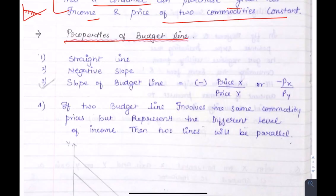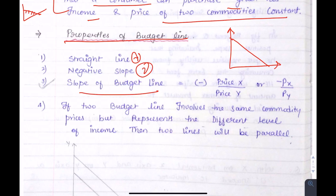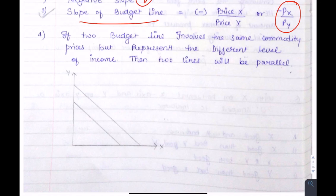Now what are the properties of the budget line? It is downward sloping and straight — that is the first property, with a negative slope. The slope of the budget line is represented as the price of X divided by the price of Y. If there are two budget lines, say A and B, the B budget line shows higher income than A. As a person's income increases with prices constant, the budget line will shift parallelly outward, representing higher income.